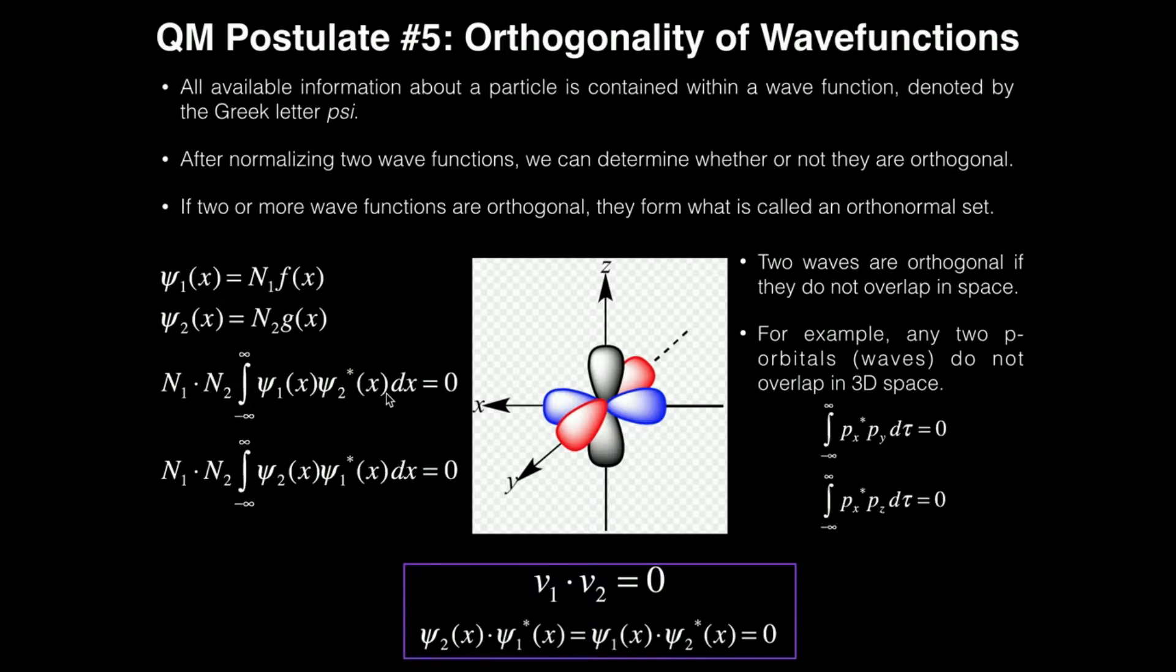Now notice in this first one that I have written here, I have ξ2 as the complex conjugate. Again, it doesn't matter which of the wave functions you make the complex conjugate. So what I did here is on the bottom, I switched them. I have N1 times N2 times the integral from negative to positive infinity of ξ2 times ξ1* dx equals 0. If the two wave functions are orthogonal, the integral goes to 0, and it doesn't matter which of the functions you make the complex conjugate.